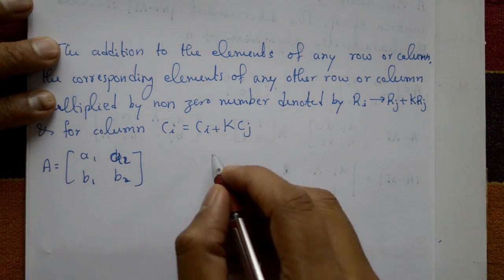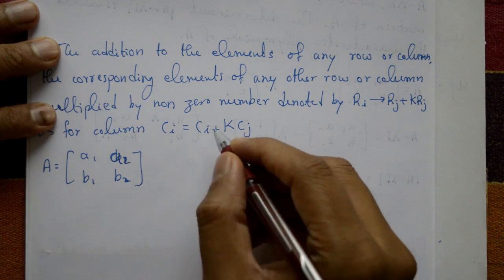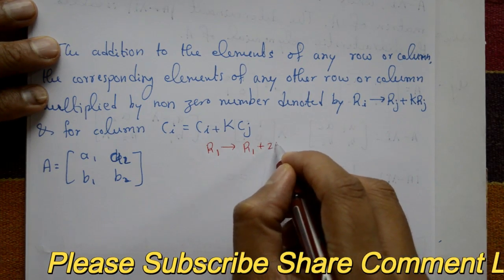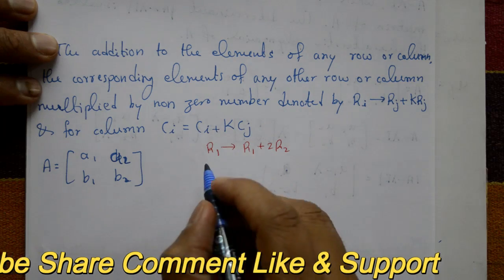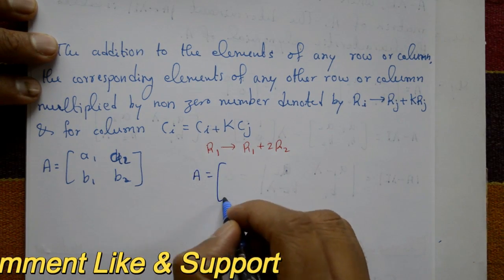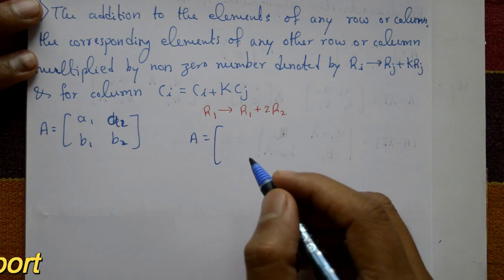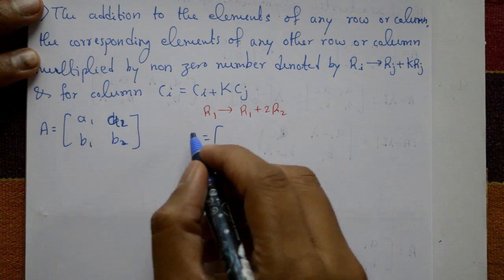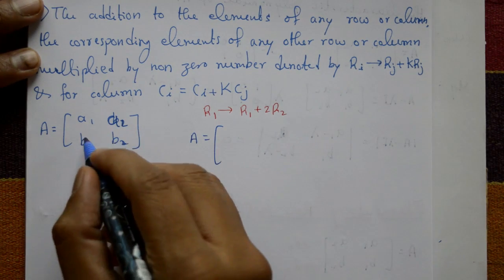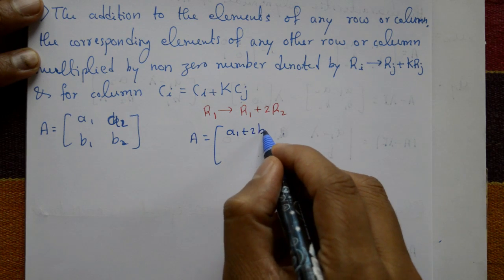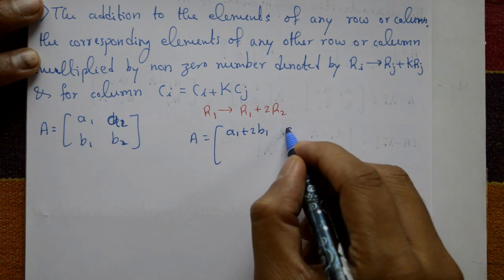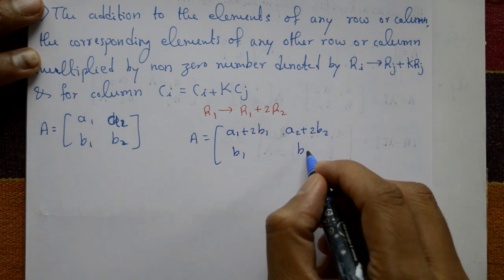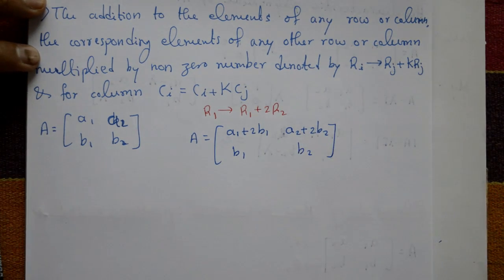For example, row-wise: r1 is equal to r1 plus 2 times r2. The matrix A becomes: first row is a1 plus 2b1, a2 plus 2b2 — that is, r1 multiplied by 2 and added to the original r1. The second row remains as it is: b1, b2.